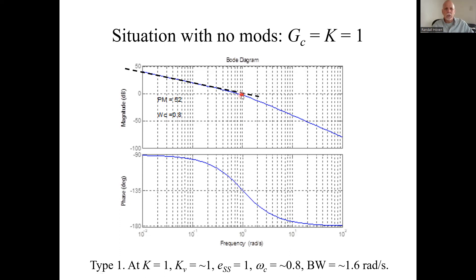our steady state error constant, which means one is one. One over one is the steady state error, so the steady state error is a full one, 100%.